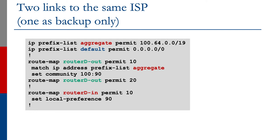For the outbound route map router-D-out, permit 10 matches the aggregate and sets the community to 100:90 — 100 is the AS of the upstream and 90 is the local preference we want them to set. A second statement, permit 20, allows anything that doesn't match the aggregate to be permitted without setting a community. For the inbound route map on router D, permit 10 sets local preference to 90, because the upstream sends the same default route that it sends to router A.